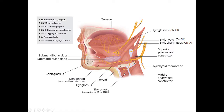Down here is the thyrohyoid muscle, innervated by a branch — the nerve to the thyrohyoid — which is basically the C1 spinal nerve hitching a ride on the hypoglossal nerve. Also visible here are the hyoglossus muscle, the geniohyoid, the genioglossus, the submandibular duct, and the submandibular gland.